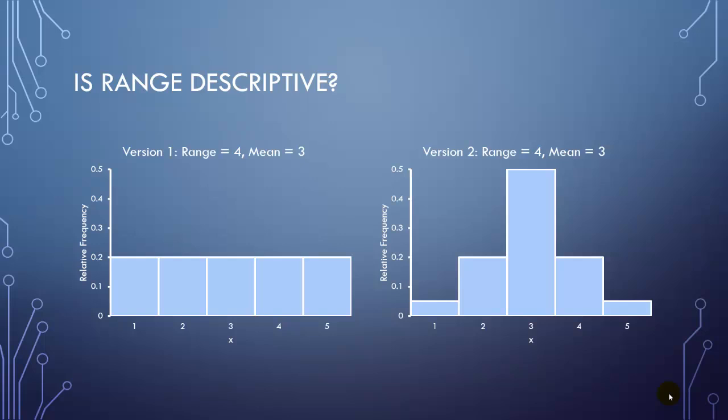For version two, again, the average is still three and the range is still four, but the vast majority of the time x is three. Only a few times is x one or x five, so it's a lot more consistent than in the first example.